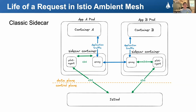I can't talk about Ambient without first rehashing the sidecar model. In the most basic case, every application pod in the mesh gets injected with a sidecar. The sidecar container consists of two processes: Envoy, which performs all the routing and traffic management functions that make up a service mesh, and Pilot Agent, which is the Istio process that feeds Envoy the various XDS configurations that it receives from the Istio-D control plane. And not pictured but worth mentioning is the init container that is also injected, which performs the IP tables traffic capture for the pod to route all inbound and outbound traffic to the Envoy process.